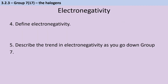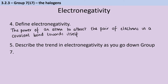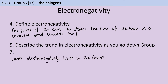Electronegativity can be defined as the power of an atom to pull towards it the pair of electrons in a covalent bond. As you go down group 7, the elements become less electronegative. This is why fluorine is the most reactive, and as we go down, the reactivity decreases because they become less electronegative.